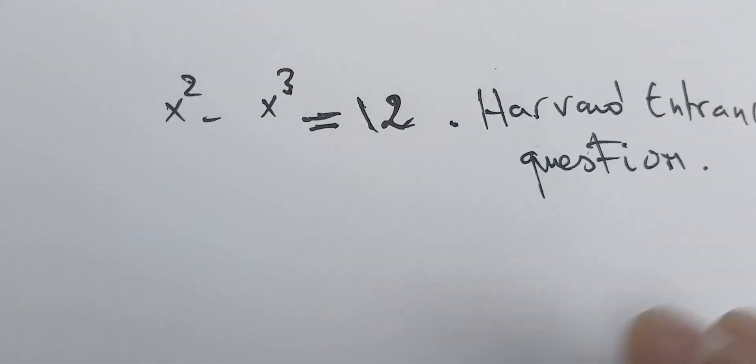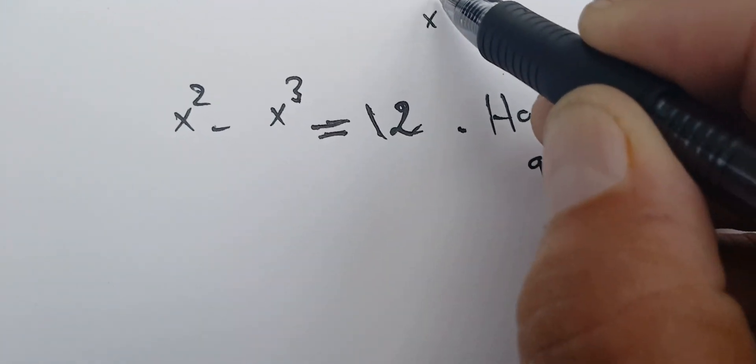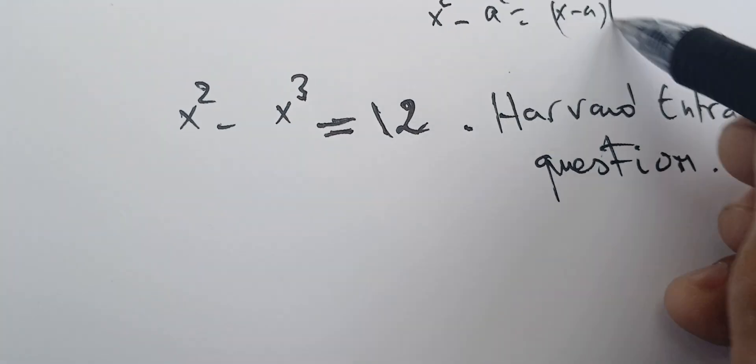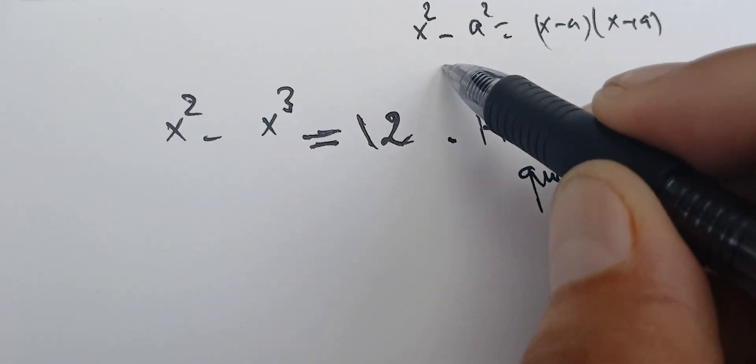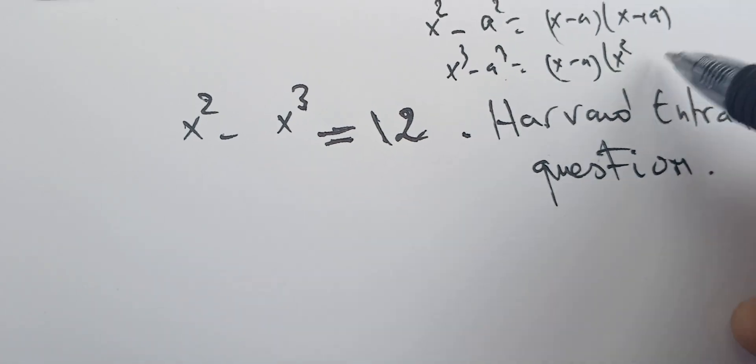Especially if you know these famous identities: x squared minus a squared is x minus a times x plus a, and x cubed minus a cubed is x minus a times x squared plus ax plus a squared.